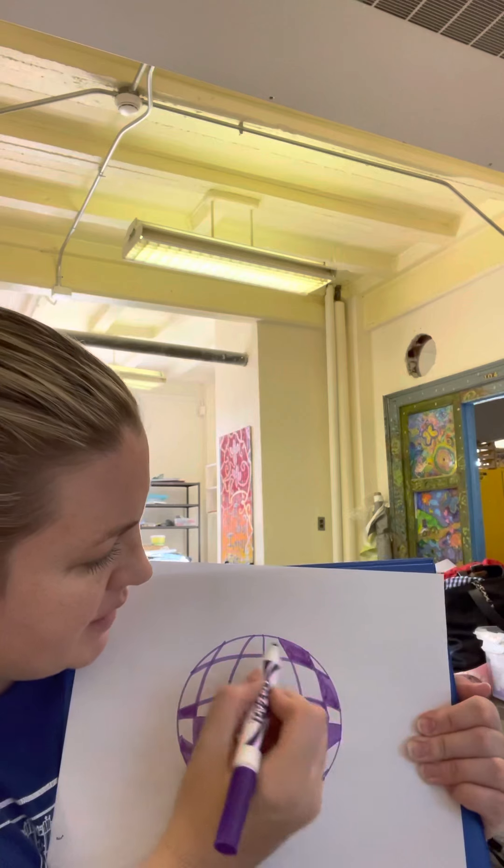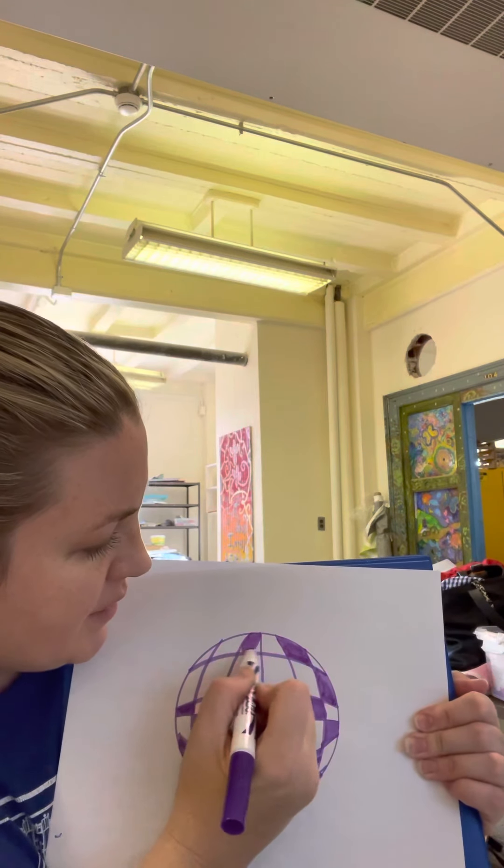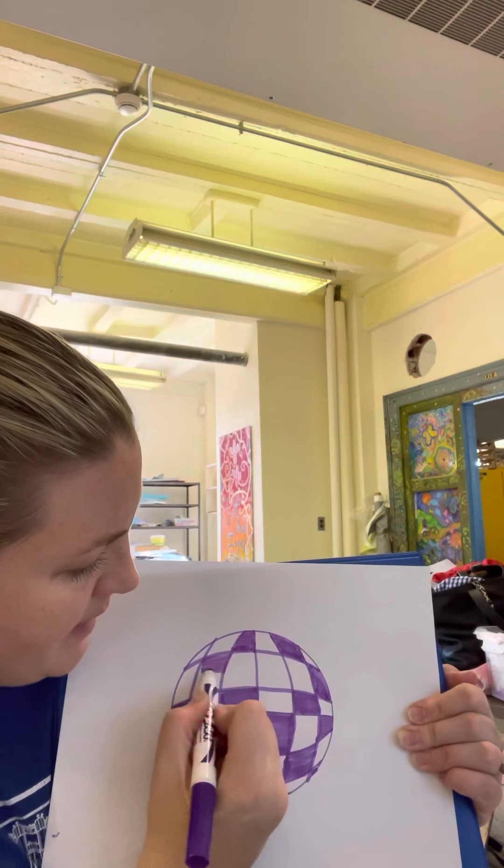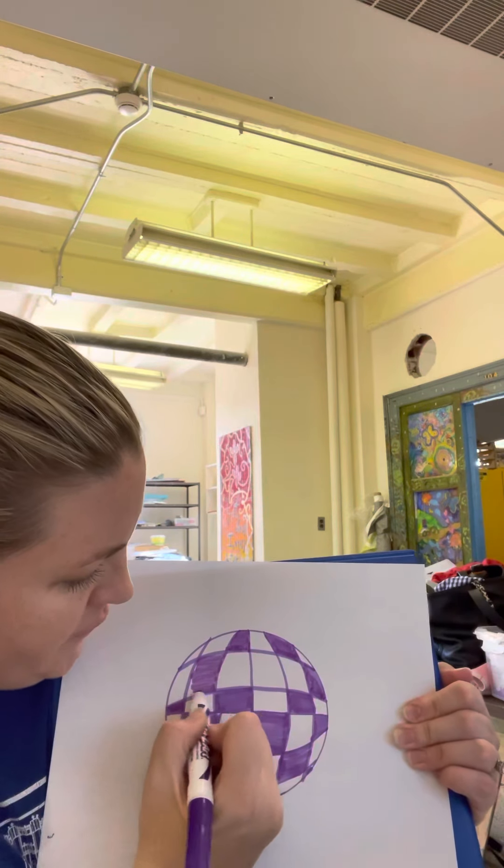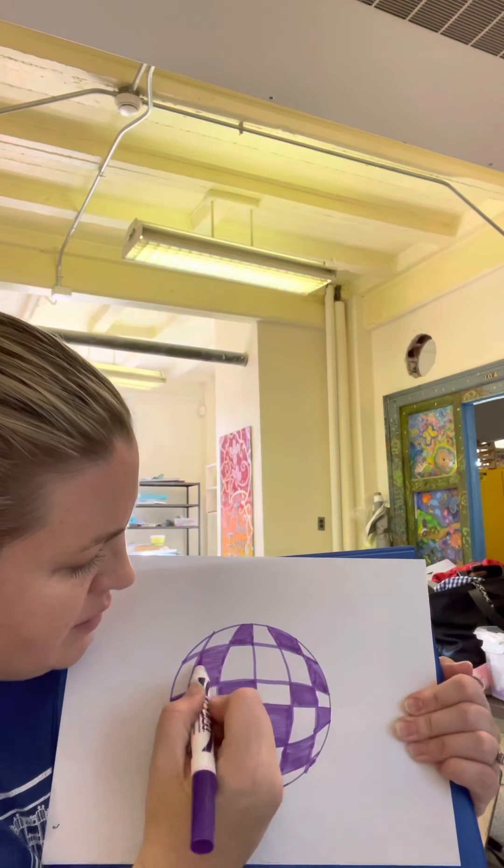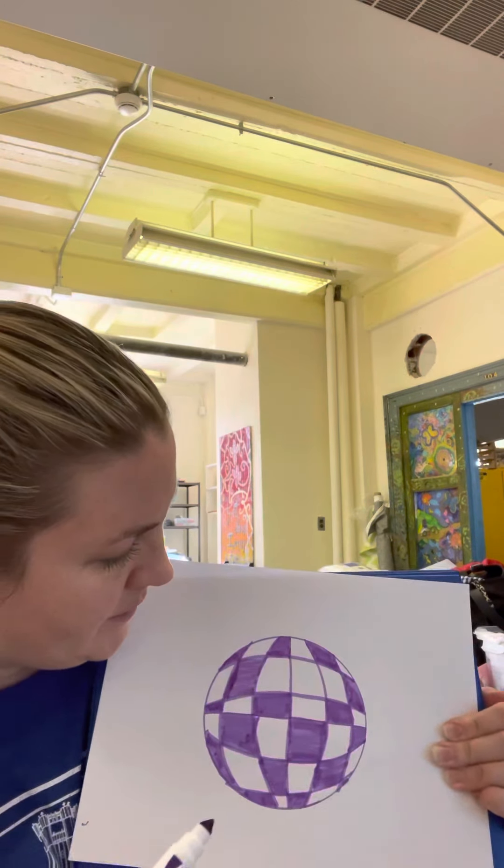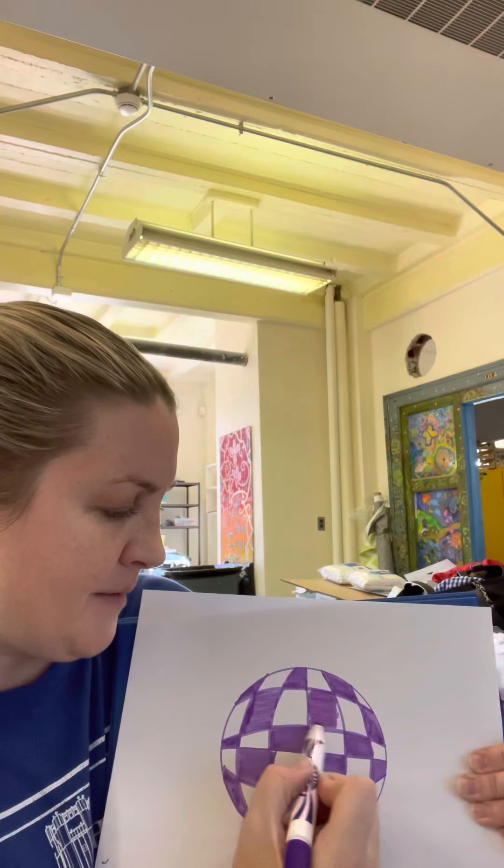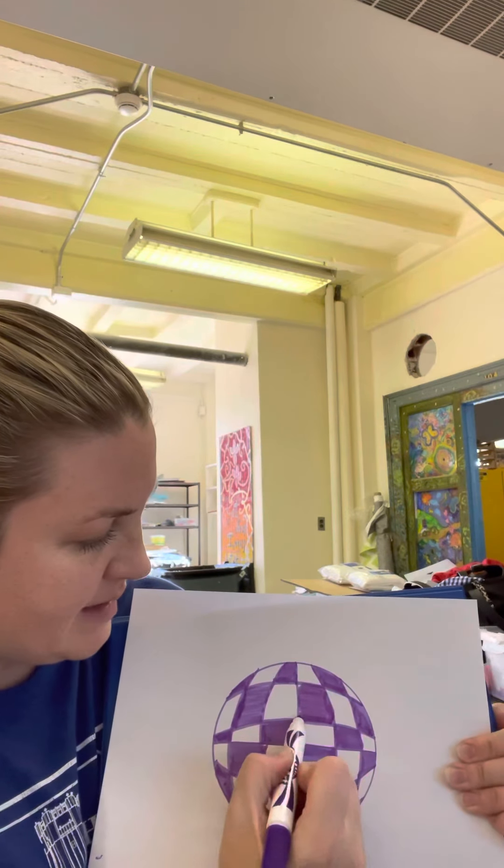Once you're done coloring your checkerboard on your sphere, you can choose what you want to do to the background. You can show movement in the background, or you can leave it a straight checkerboard. Oh, no! Oh, okay. Never mind. I thought I missed one the wrong way, but I just missed coloring it in.